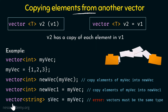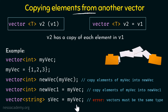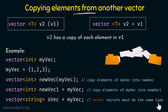Here we have another example where we define a vector svec of type string and say it is equal to myvec. This would throw an error because svec is of type string but myvec is of type integer. We cannot copy the elements of myvec to svec because they are not of the same type. Whenever copying elements from one vector to another, we must make sure the vectors are of the same type, otherwise it would throw an error.